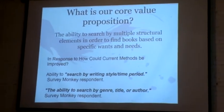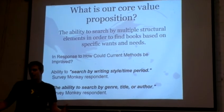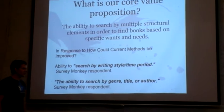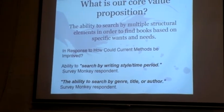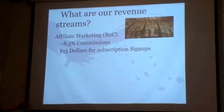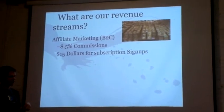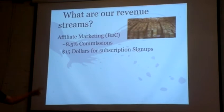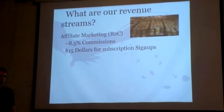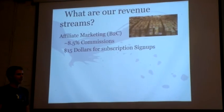What are we trying to do? We're really trying to create the structural elements of a book and allow you to search by them. Writing style is one suggestion we'd love to start working on. For revenue streams, we do affiliate marketing — Amazon gives us 8.5% commissions, and we already have that locked in. There are also a couple of 'Netflix for books' services; if we sign users up, we can get $15 per subscription, while also linking them to books they've found.